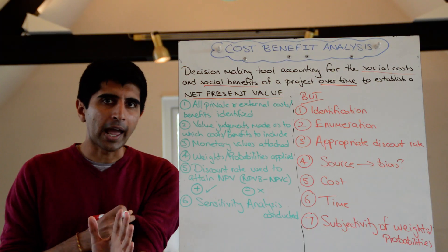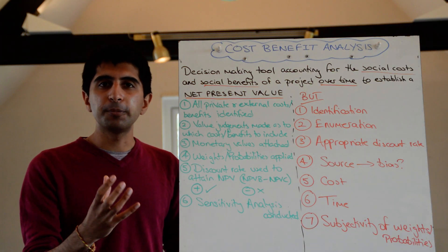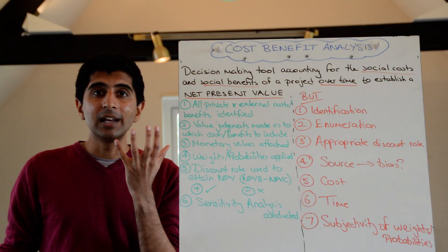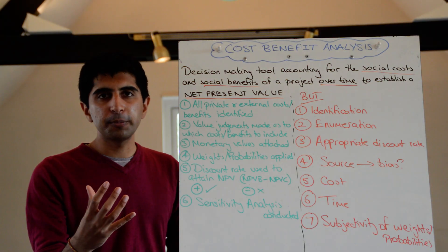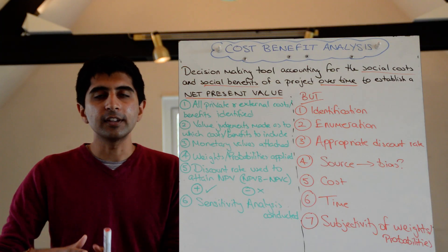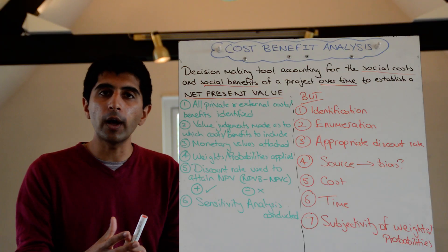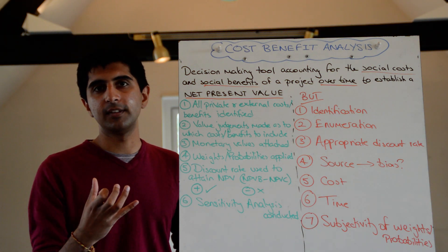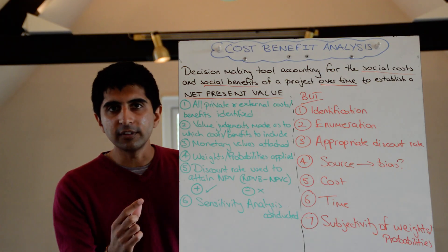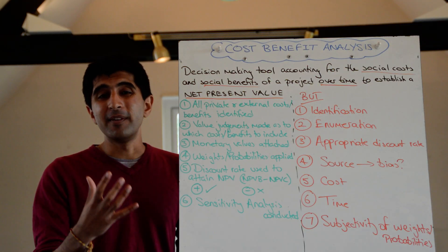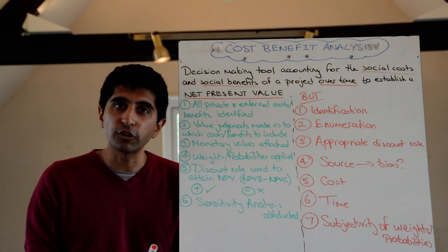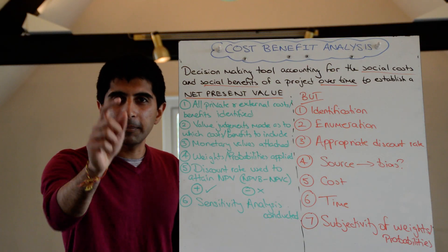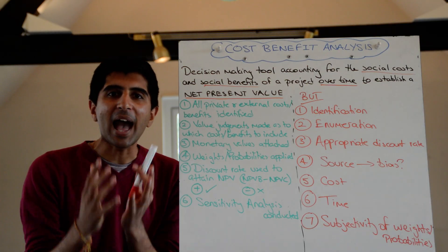A key thing to understand is that the main idea of cost-benefit analysis in economics is to understand whether the allocation of resources is as efficient as possible. If the net present value figure is positive, then pouring public money into such a project is worthwhile because that is the most efficient allocation of resources — we are allocating resources where there is a net benefit to society. Whereas if the figure is negative, that would be allocatively inefficient because there will be a net cost to society. In an essay, make that very clear to the examiner: this all comes back to the allocation of resources.